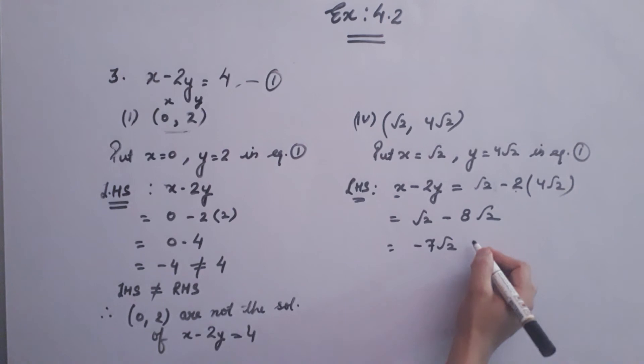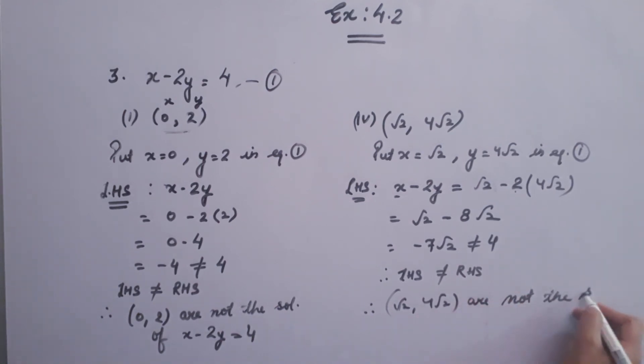which is not equal to 4. Therefore, left hand side is not equal to right hand side. Hence, root 2 and 4 root 2 are not the solution of x minus 2y is equal to 4.